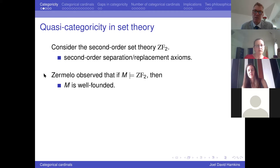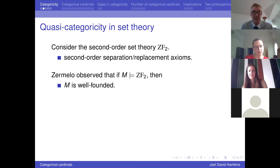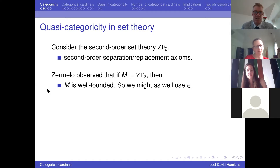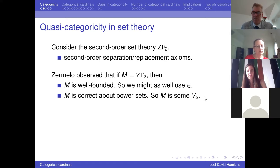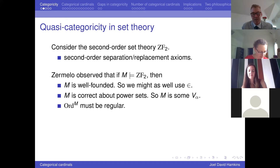Zermelo proved that if you have a model of that second-order Zermelo theory, then first, it has to be well-founded — because if it were ill-founded, there would be an epsilon-descending omega-sequence, and the second-order resources would enable you to see that. So it must be well-founded, and up to isomorphism it's going to be isomorphic to a transitive set. Secondly, it must be correct about power sets because of the second-order separation axiom: every subset exists there, so M will compute power sets correctly. Therefore when you do the internal cumulative hierarchy inside M, it will be correct, and M is going to end up being some V_alpha. The height alpha must be regular by the second-order replacement axiom. So the ultimate conclusion is that M has to be a rank initial segment V_kappa for some inaccessible cardinal kappa.